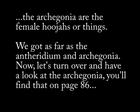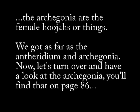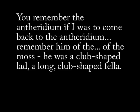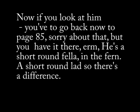The archegonia are the female structures. We've covered the anteridium and archegonia. Now let's draw and have a look at the archegonia — you'll find that on page 86. You see the archegonia there, and on page 241 there's a different archegonia. Remember the anteridium of the moss — he was a club-shaped fellow, a long club-shaped fellow. Now if you look back to page 85, in the fern he is a short, round fellow.